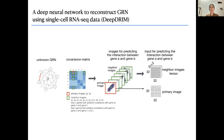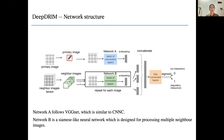Our model, DRIM (deep neural network to reconstruct GRN using single-cell RNA-seq data), also called Deep Dream, takes two types of input: primary images and neighbor images, which are concatenated into a neighbor images tensor. The deep neural network is composed of two components: Network A, designed to process primary images following a VGGNet structure similar to CLNC, and Network B, a Siamese-like neural network designed to process multiple neighbor images.